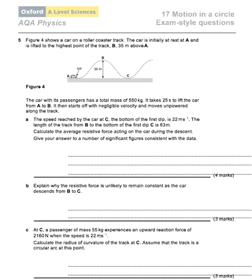Question 5: Figure 4 shows a car on a roller coaster track. The car is initially at rest at A and is lifted to the highest point on the track B, 35 meters above A. The car with its passengers has a total mass of 550 kilos. It takes 25 seconds to lift the car from A to B. It then starts off with negligible velocity and moves unpowered along the track. The speed reached by the car at C, the bottom of the first dip, is 22 meters per second. The length of the track from B to the bottom of the first dip C is 63 meters. Calculate the average resistive force acting on the car during the descent.